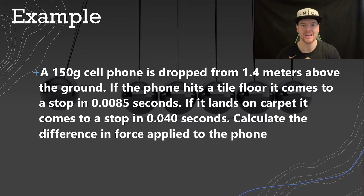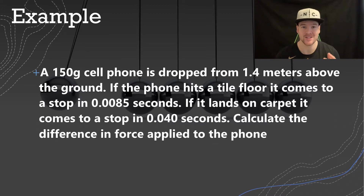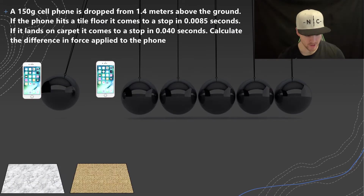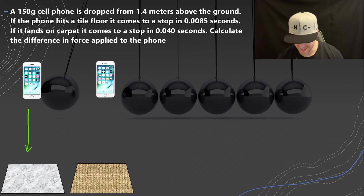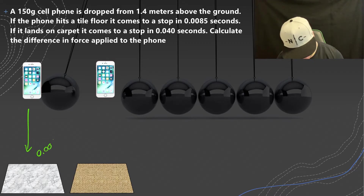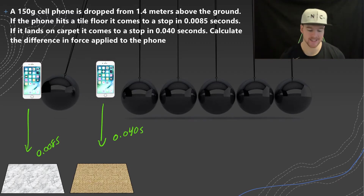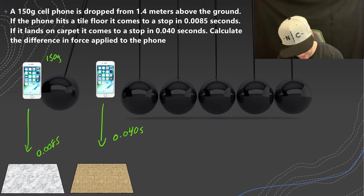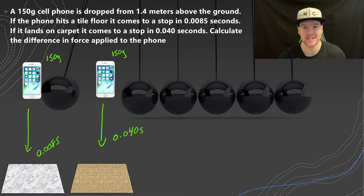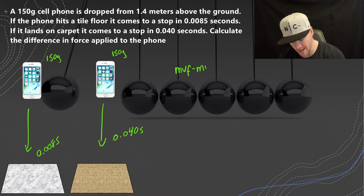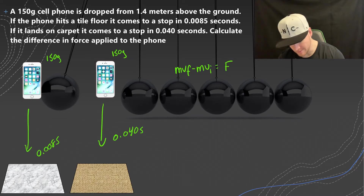Let's consider an example: a cell phone of about 150 grams falls to the ground from a height of 1.4 meters. If the phone hits a tile floor, it comes to a stop in 0.0085 seconds. If it lands on carpet, it comes to a stop in 0.040 seconds. Calculate the difference in force applied to the phone. Both phones are the same mass, so we use the impulse-momentum theorem: MVf minus MVi equals average force times time, and we solve for average force by dividing both sides by time.